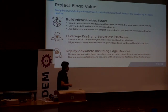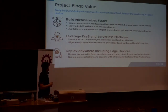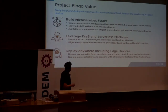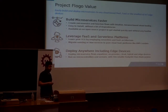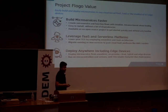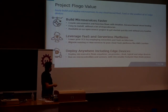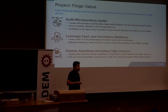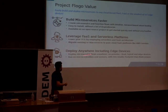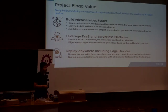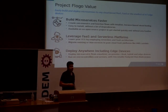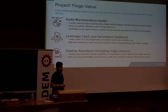To summarize the value-add of Project Flogo: you can build microservices faster than ever before with the web-based UI. It's easy to install — just a Docker container with a single command. It's available as an open source project with code on GitHub. You can leverage serverless platforms and develop and deploy AWS Lambda code through the same logic. You can deploy anywhere, including edge devices, on-premise cloud, hybrid cloud, or edge devices. And it is extremely light.